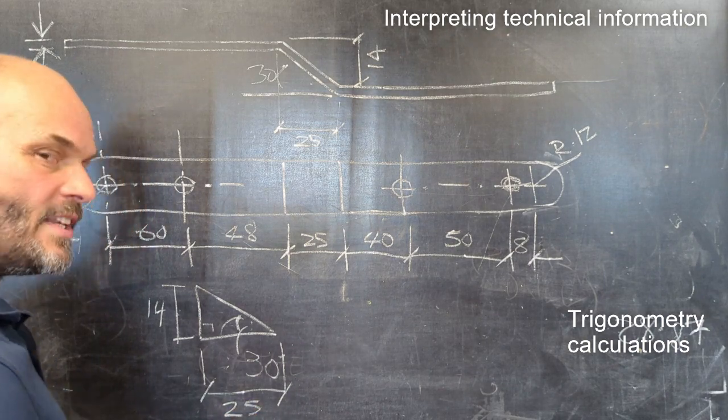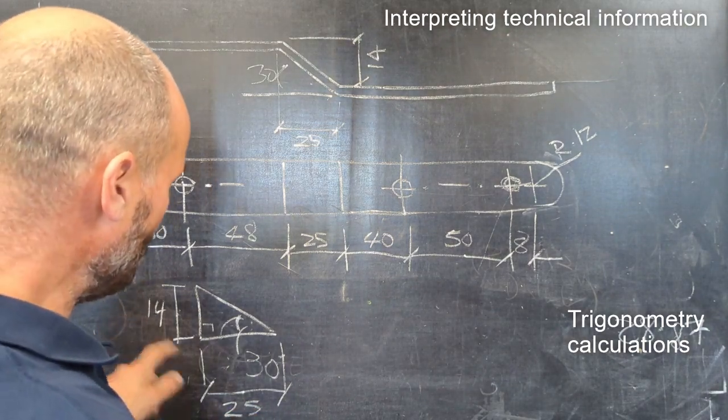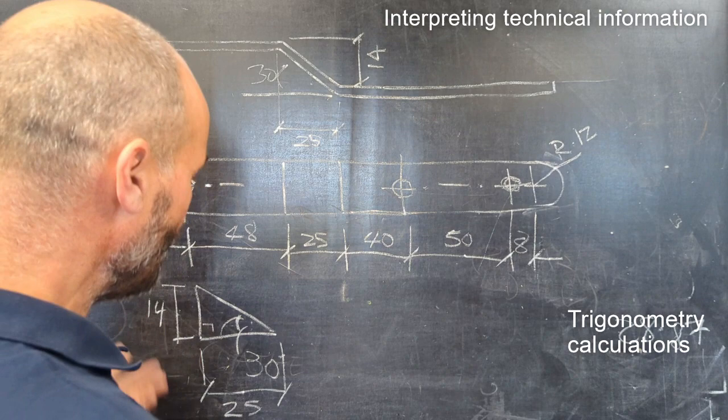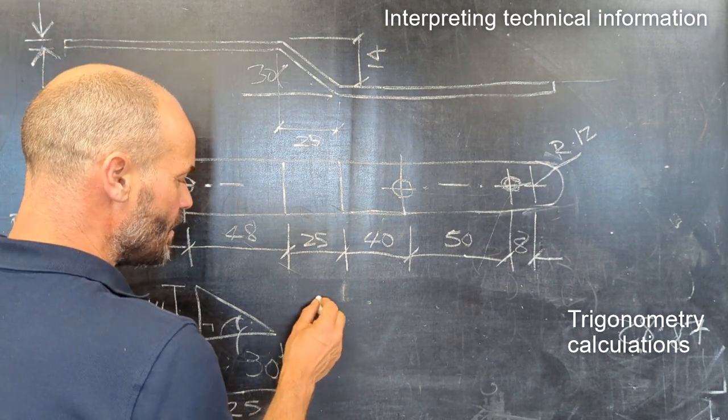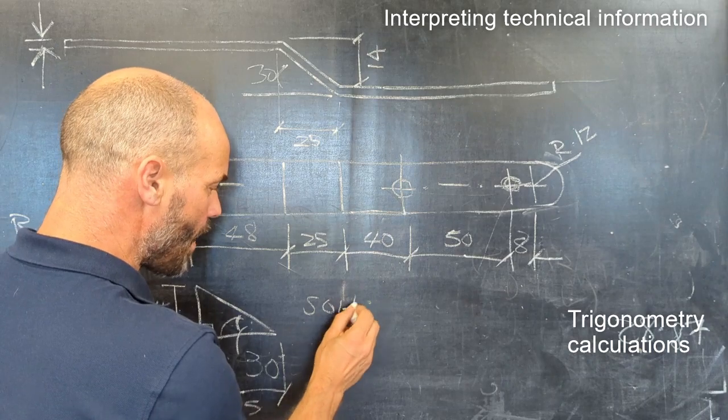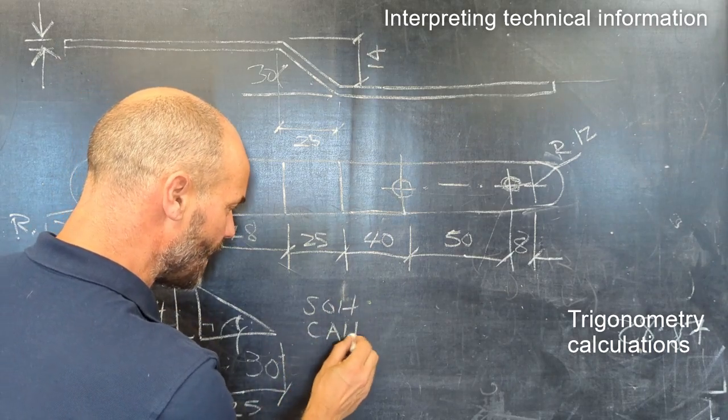We know one more piece of information that we need. Think about your trigonometry calculations - you've got SOH, CAH, and TOA.